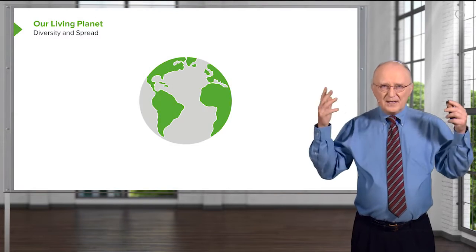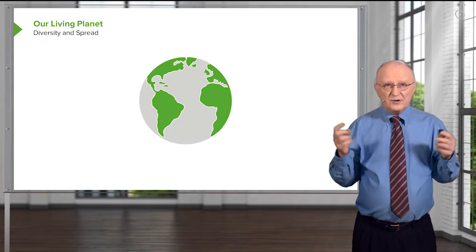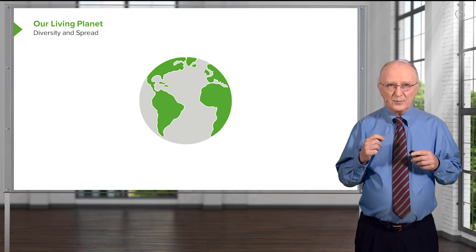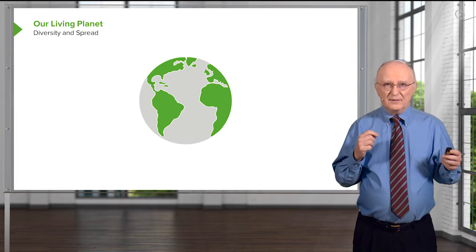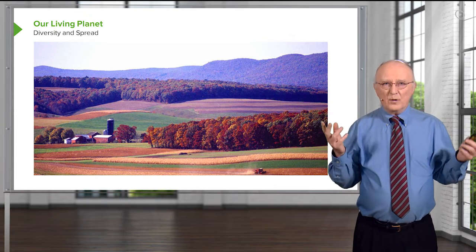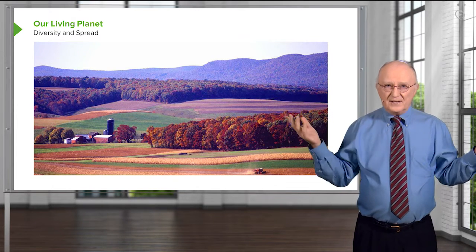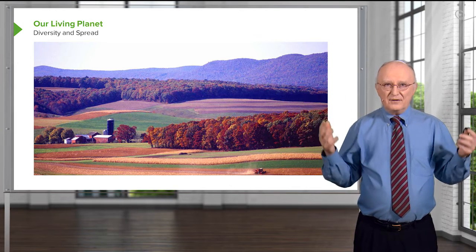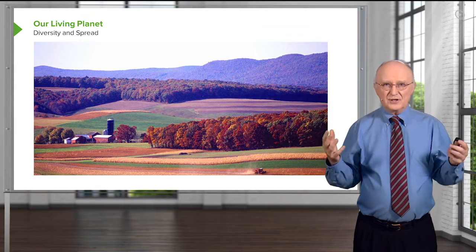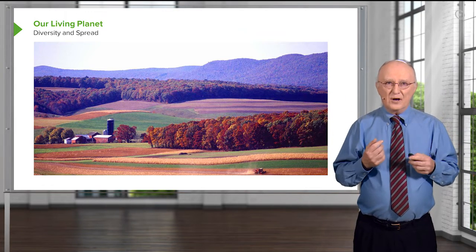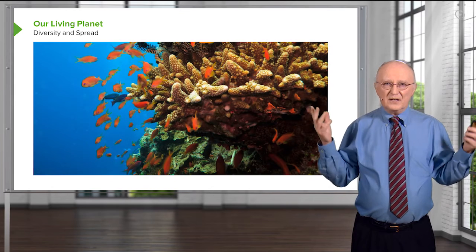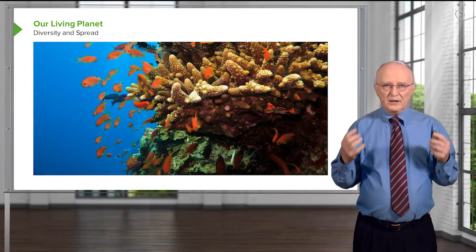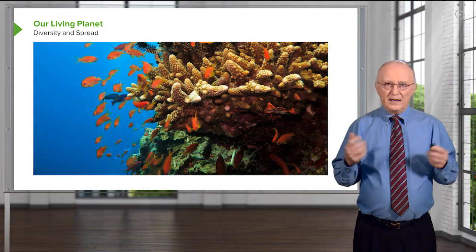Life is abundant on planet Earth and as far as we know in the universe, that's the only place it exists, although likely it exists in other places as well. Life is diverse and life is widespread. From the deserts in Africa to the farmlands of America, life has found niches in every land system on earth. In the sea, we can look in the deep sea thermal vents, we can look at the top of the ocean, and everywhere we look we see aquatic life.